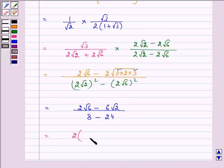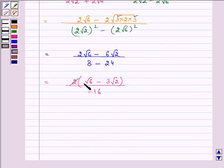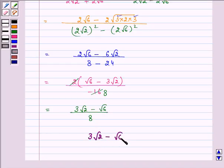Taking 2 common, we are left with √6 minus 3√2 upon -16. Simplifying and taking the minus sign common from the numerator, we have 3√2 minus √6 upon 8. And this is the answer to the given question.